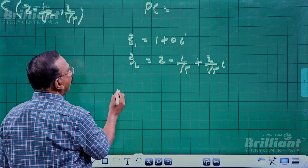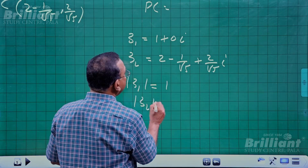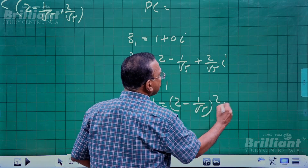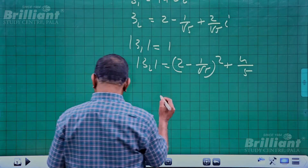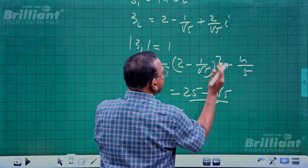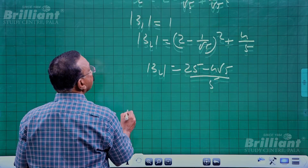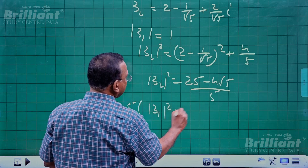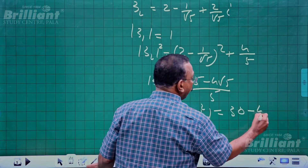Now we find the moduli. |z₁| = 1. For |z₂|², we compute (2 - 1/√5)² + 4/5, which equals (25 - 4√5)/5. Therefore 5|z₂|² gives a value in that form, and 5(|z₁|² + |z₂|²) = 30 - 4√5.